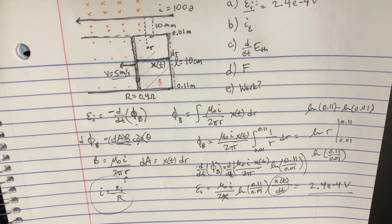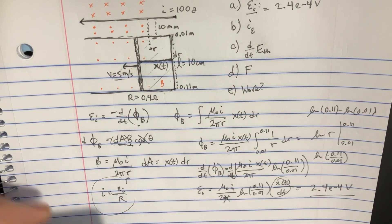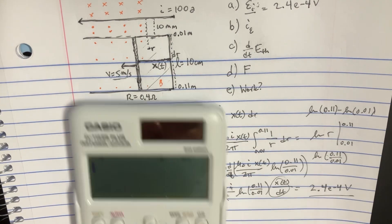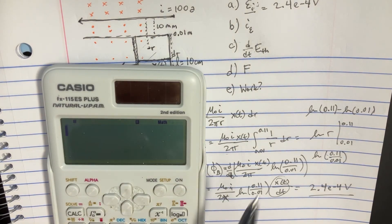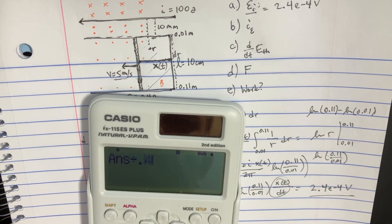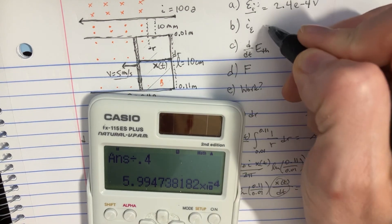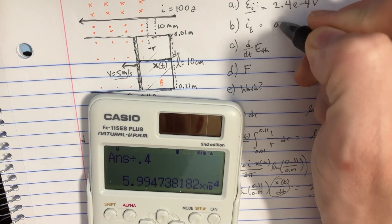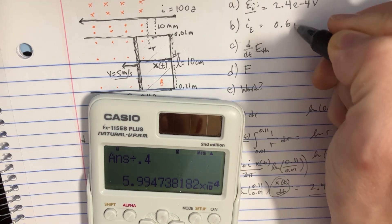That's just going to be EI divided by R. So let's plug that into our little equation. We know that R is going to be this thing right here. We'll have an answer. And we're going to divide that by 0.4. So the induced current is just going to be 0.6 milliamps.